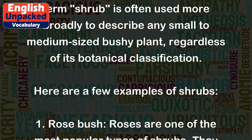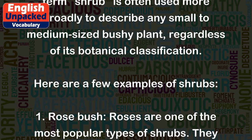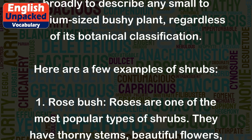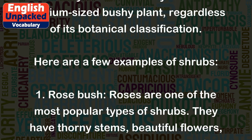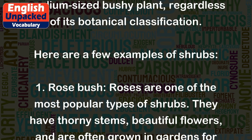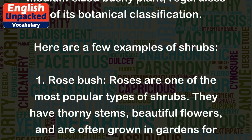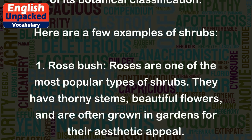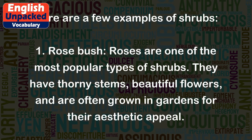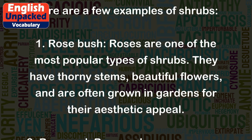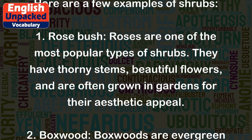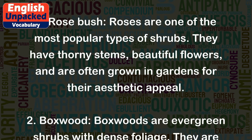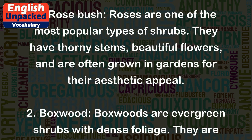Here are a few examples of shrubs. 1. Rose Bush. Roses are one of the most popular types of shrubs. They have thorny stems, beautiful flowers, and are often grown in gardens for their aesthetic appeal.